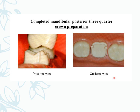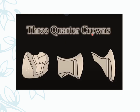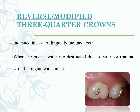The three-quarter crown preparation, though not commonly done anymore, involves preparing three-quarters of the tooth surface while leaving one surface intact. The preparation includes ledges and proximal surfaces. A reverse and modified three-quarter crown is also a variant used in specific clinical scenarios.